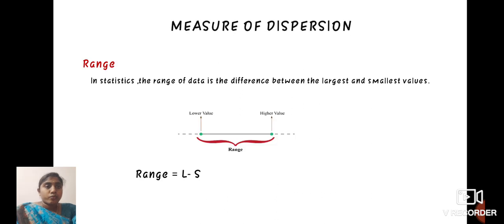Measure of dispersion. First, we define range. In statistics, the range of data is the difference between the largest and smallest value. Range is equal to larger value minus smaller value.